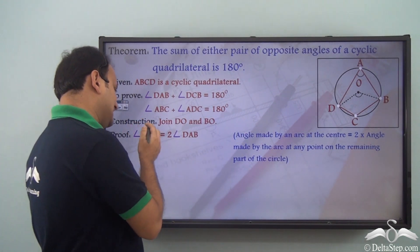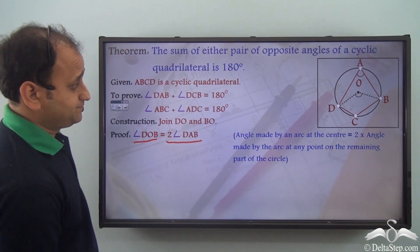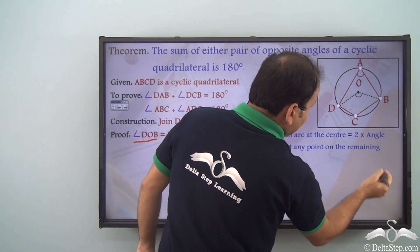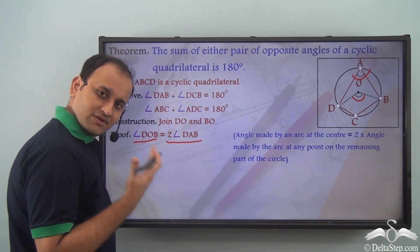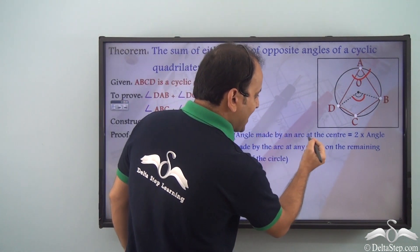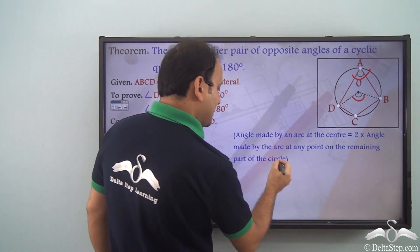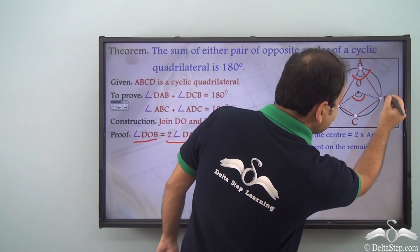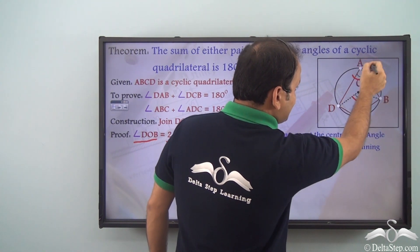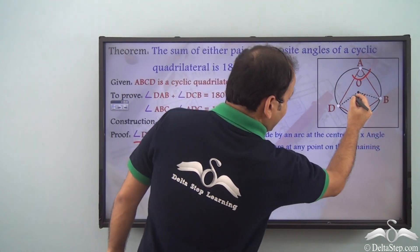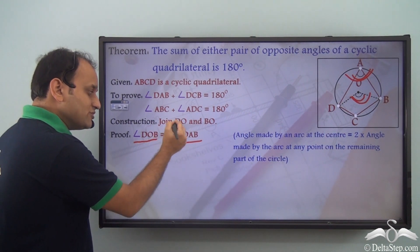Now, we can say that angle DOB is equal to 2 times angle DAB. This is because the angle made by an arc at the centre is equal to twice the angle made by the same arc at any point on the remaining part of the circle. Here, arc DCB makes an angle at the centre and the same arc DCB also makes an angle at point A. So, angle DOB is equal to 2 times angle DAB.